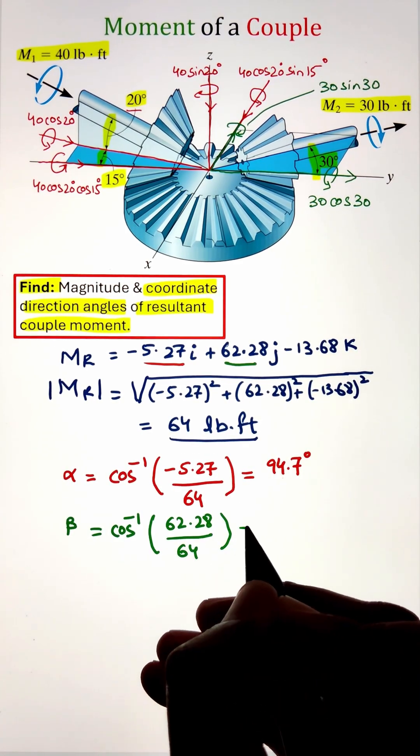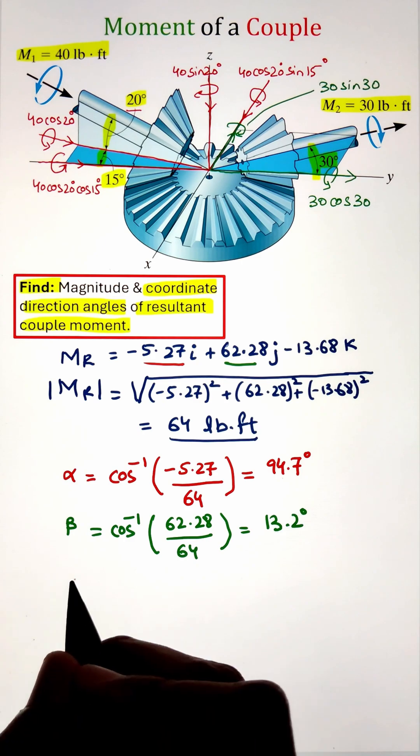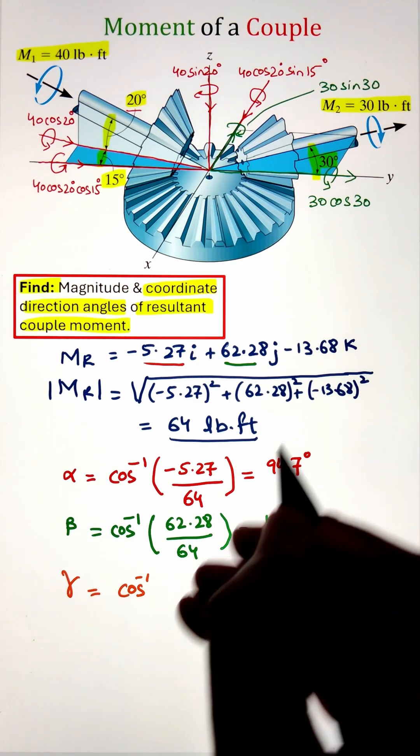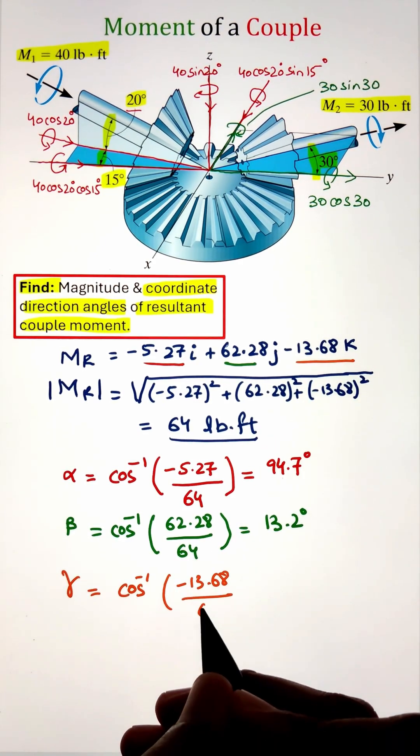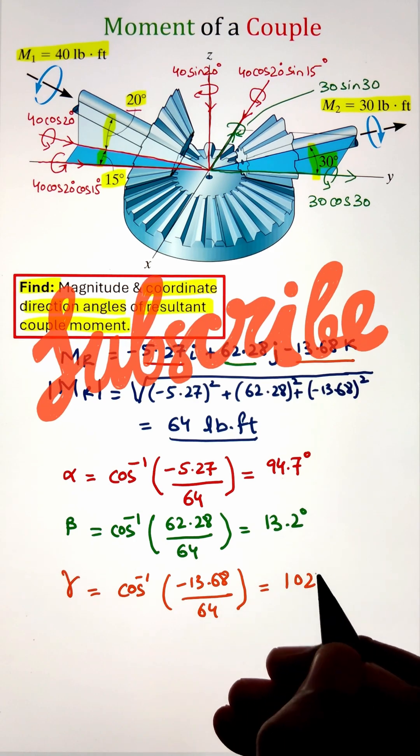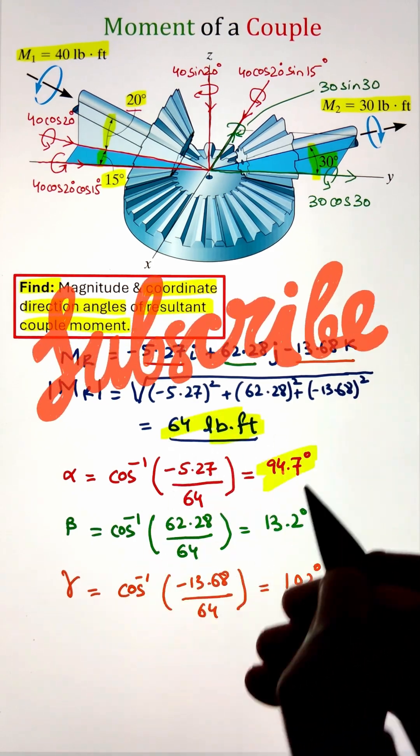Similarly, if we take the cos inverse of the y component, it is going to give me an angle with respect to the y-axis. And if we take the z component divided with the magnitude and take the cos inverse, it's going to give me the angle it is making with respect to the z-axis.